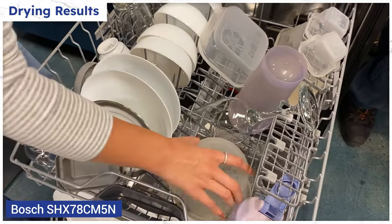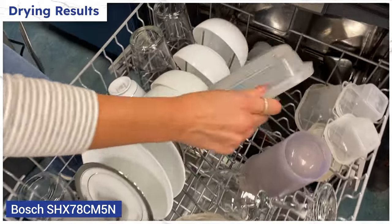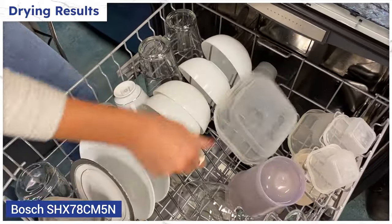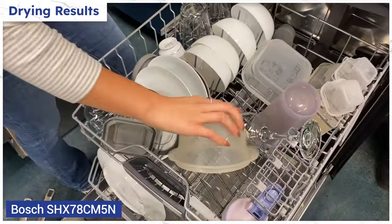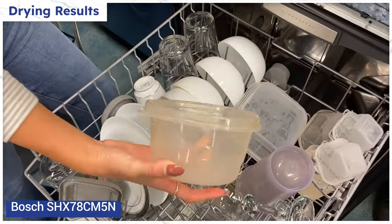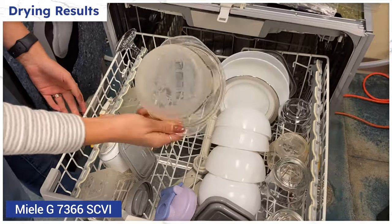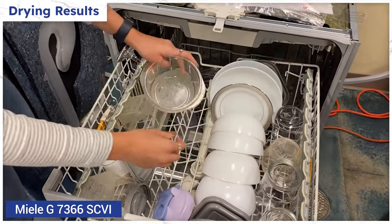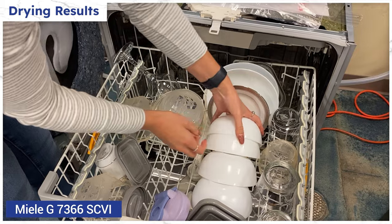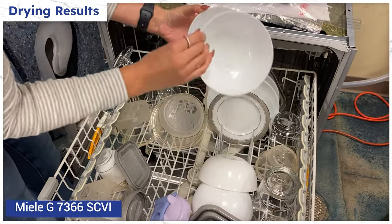Bosch's results were by far the best for drying with the crystal dry drying system. It only left a bit of moisture on the rims of the plastic Tupperware. Miele was second. They have two ports for air at the bottom of their dishwasher allowing air to come in and dry. The hot air is dissipated as water and then drained.